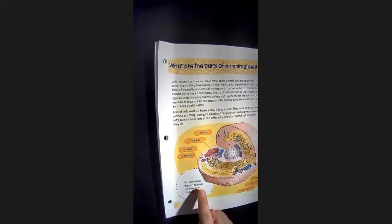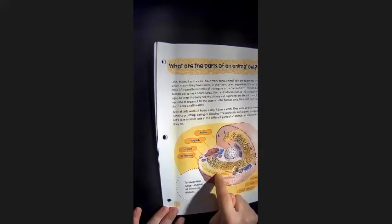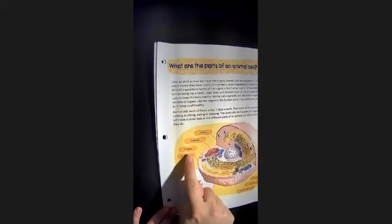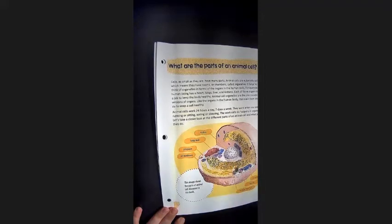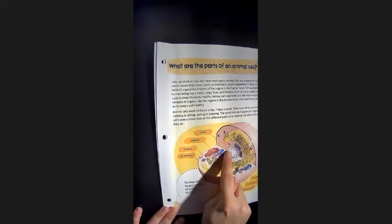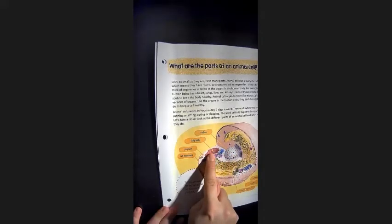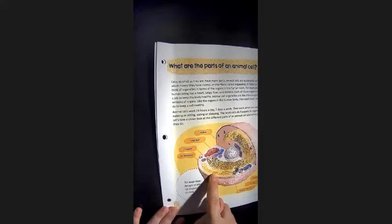Let's take a closer look at the different parts of an animal cell and what jobs they do. This image shows parts of animal cells discussed in this book. So here we have a diagram of an animal cell and then we have labels pointing to the different organelles that we will be learning about. Here is the nucleus, the Golgi body,